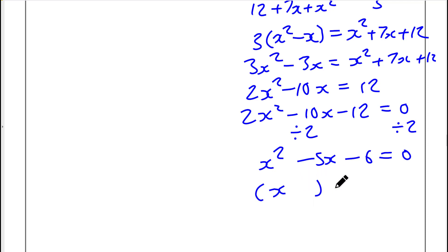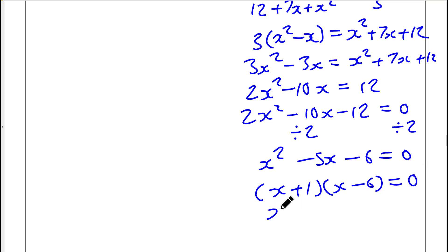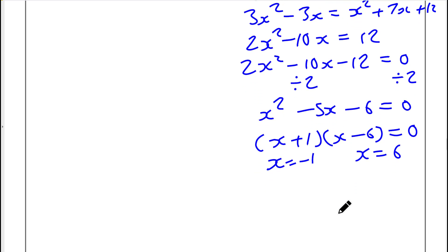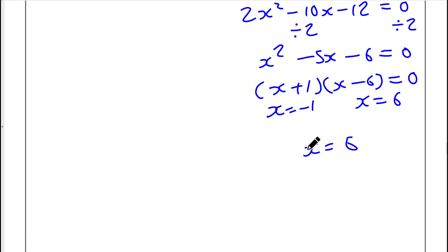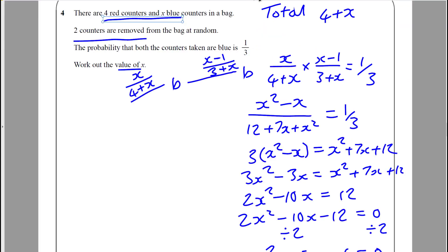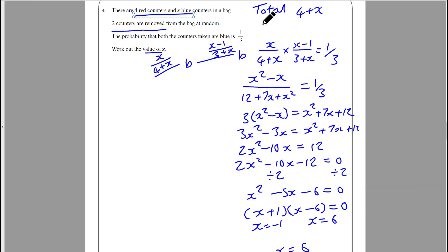Factorising x squared minus 5x minus 6 equals 0: we need factors of minus 6 that sum to minus 5, giving (x minus 6)(x plus 1) equals 0. So x equals minus 1 or x equals 6. Since x is the number of blue counters, x must equal 6. Pause here if you want to check through that.